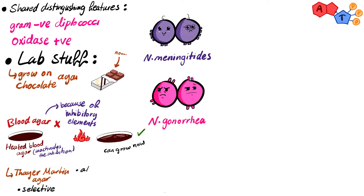Thayer-Martin agar is also known as VCN agar, referring to the antibiotics used to inhibit other organisms, which are vancomycin, colistin, and nystatin.